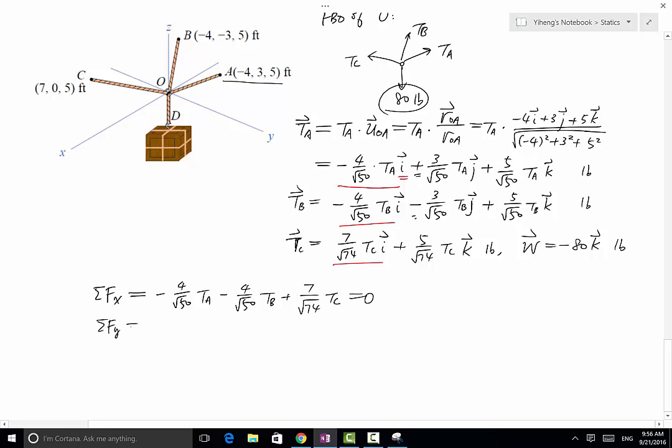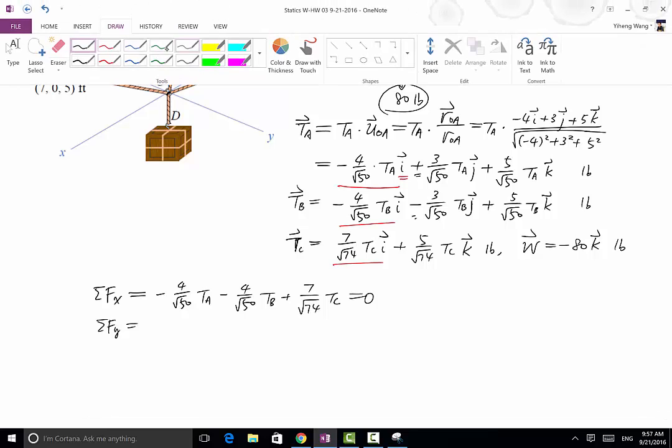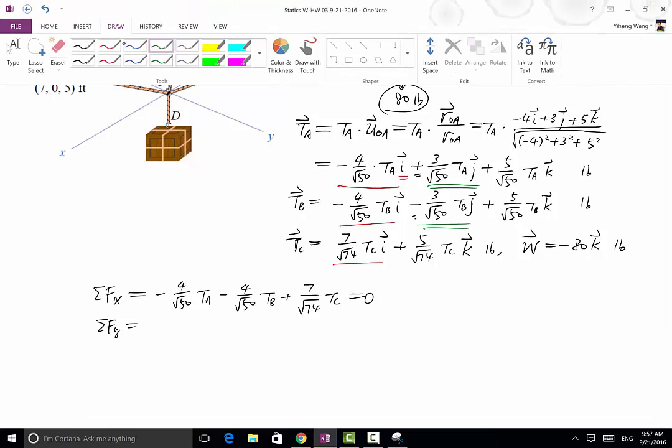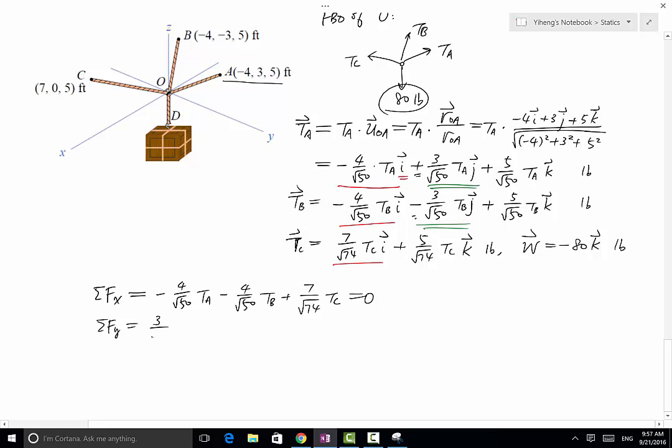Resultant force along the y direction, only adding the y components with unit vector j. So 3 over square root of 50 TA minus 3 over square root of 50 TB equals 0.